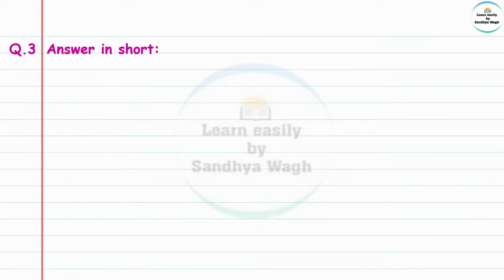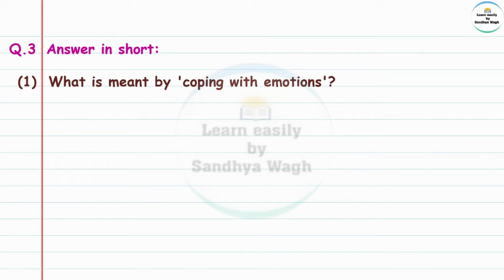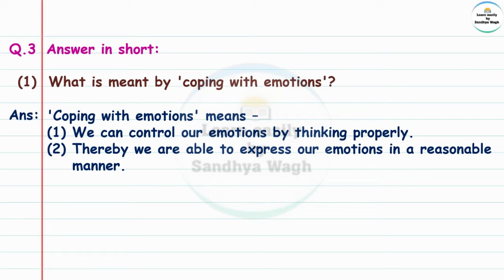Question 3: Answer in short. What is meant by coping with emotions? Coping with emotions means that we can control our emotions by thinking properly and if we are able to express our emotions in a reasonable manner.